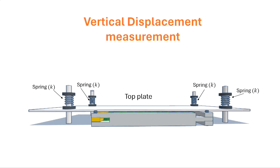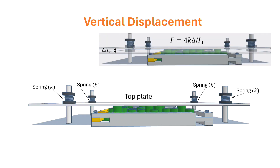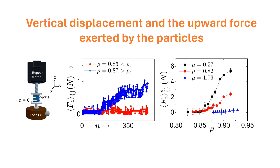This is how I measure normal stress from the top plate: as things puff out, the plate is compressed. I know the displacement and the spring constants, so I can determine the normal force. Below critical density, normal forces don't exist. After crossing critical density, normal forces build up as particles buckle more.